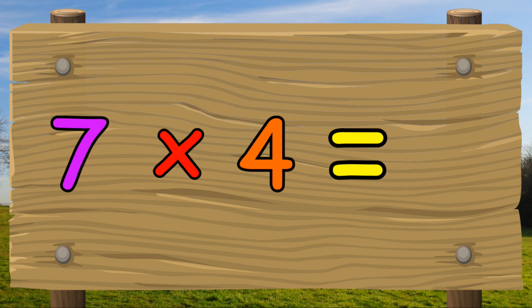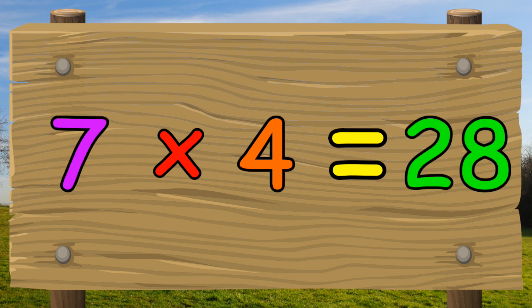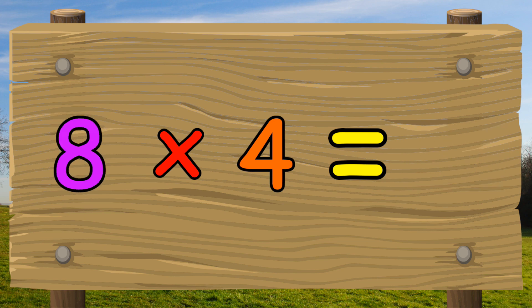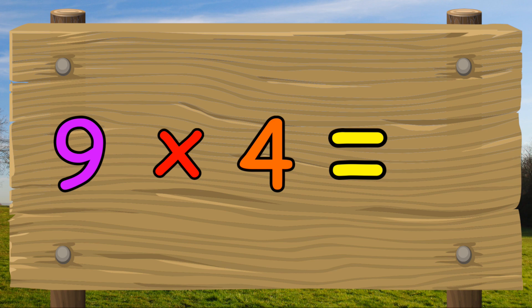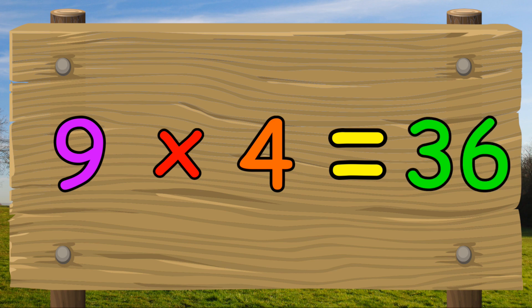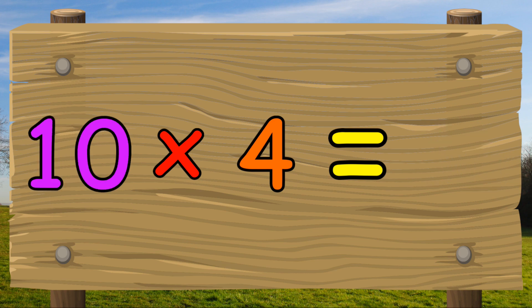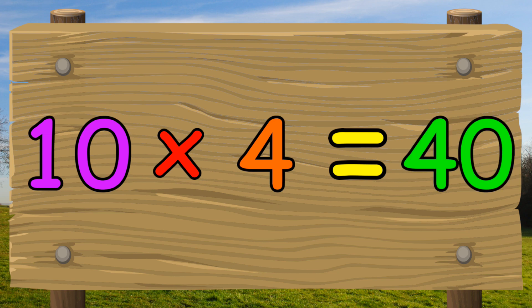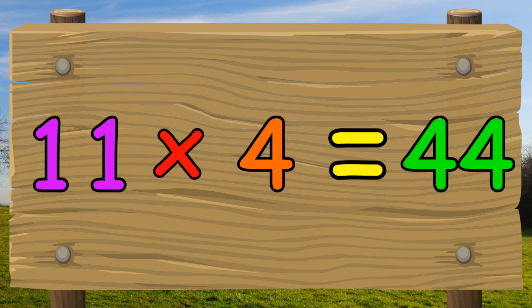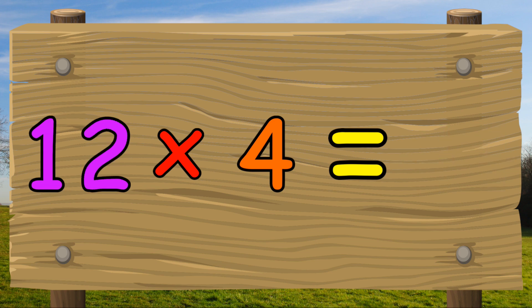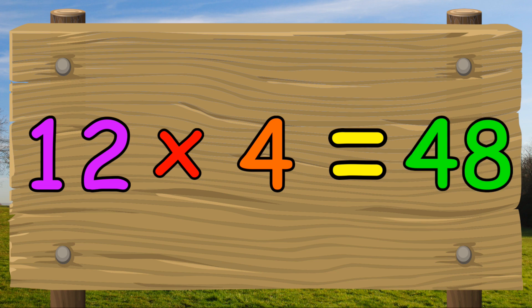Seven times four equals twenty-eight. Eight times four equals thirty-two. Nine times four equals thirty-six. Ten times four equals forty. Eleven times four equals forty-four. Twelve times four equals forty-eight.